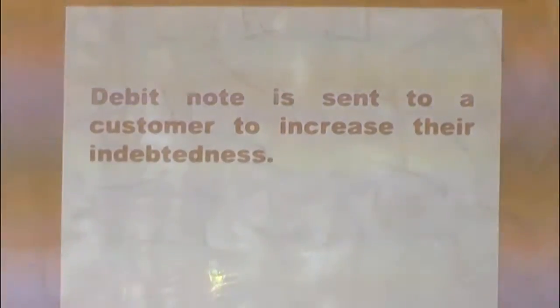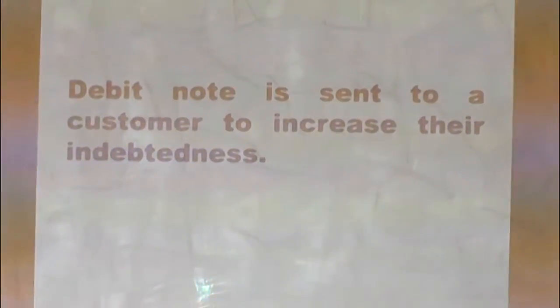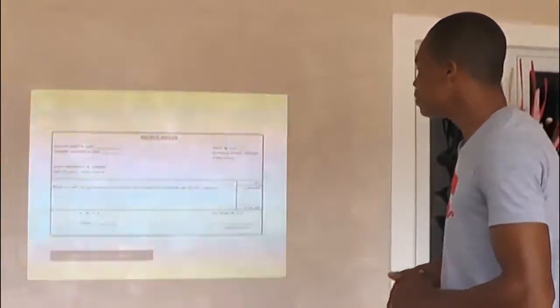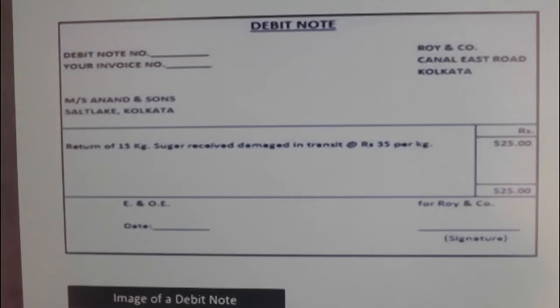The debit note is sent to a customer to increase their indebtedness. Take note of this: the debit note is sent to a customer to increase the level of debt that they are holding — that is, the total value of debt — and the debit note will be used to increase this indebtedness. This is the specimen of a debit note. Similar to that of an invoice, you have the description and the final value. And don't forget, there is always a provision for signature — the signature of the company and the signature of the person buying.